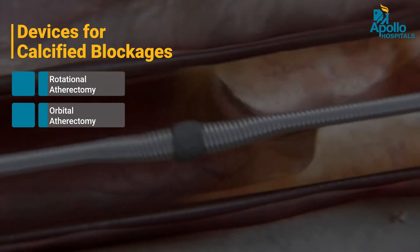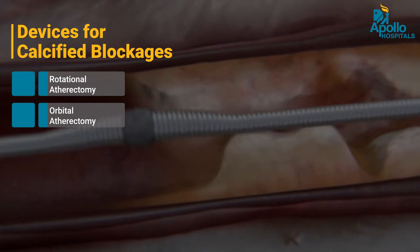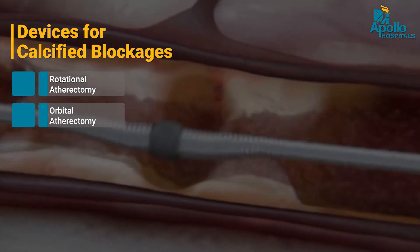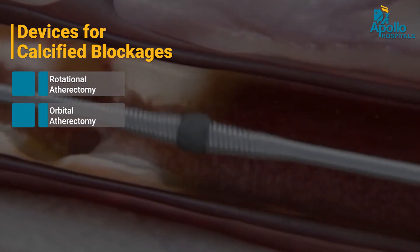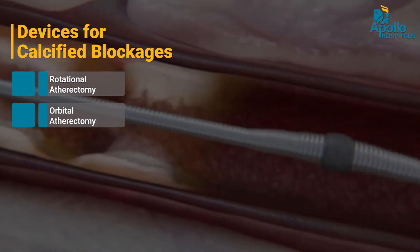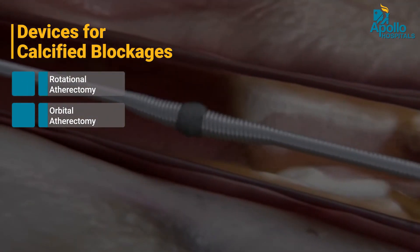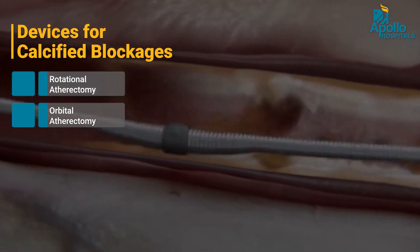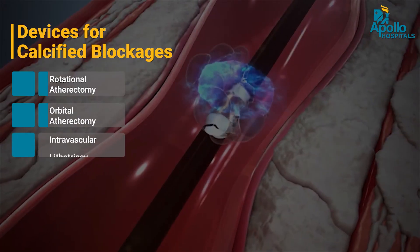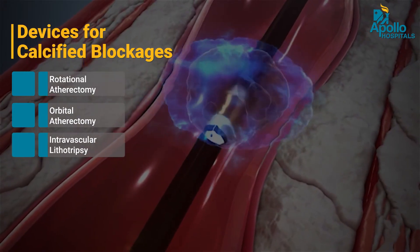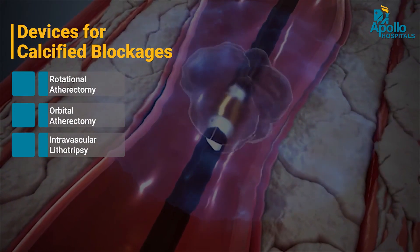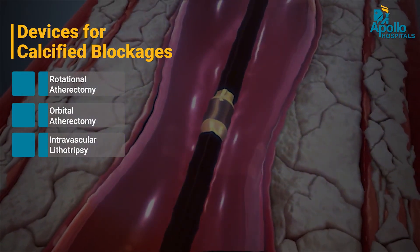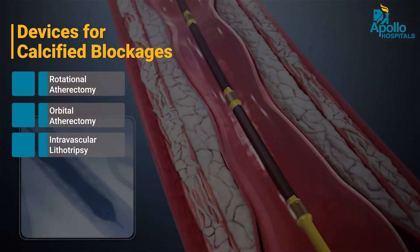Just like the Earth rotates on its axis and also rotates around the sun, orbital atherectomy has two rotations. It goes inside the blood vessel and rotates at 80,000 RPM. The calcium is again cut into small pieces, but it is a bigger device that can cut even deep calcium. The other device is called intravascular lithotripsy, where shock waves are emitted to break the calcium. These are three important devices used nowadays for calcified blockages.